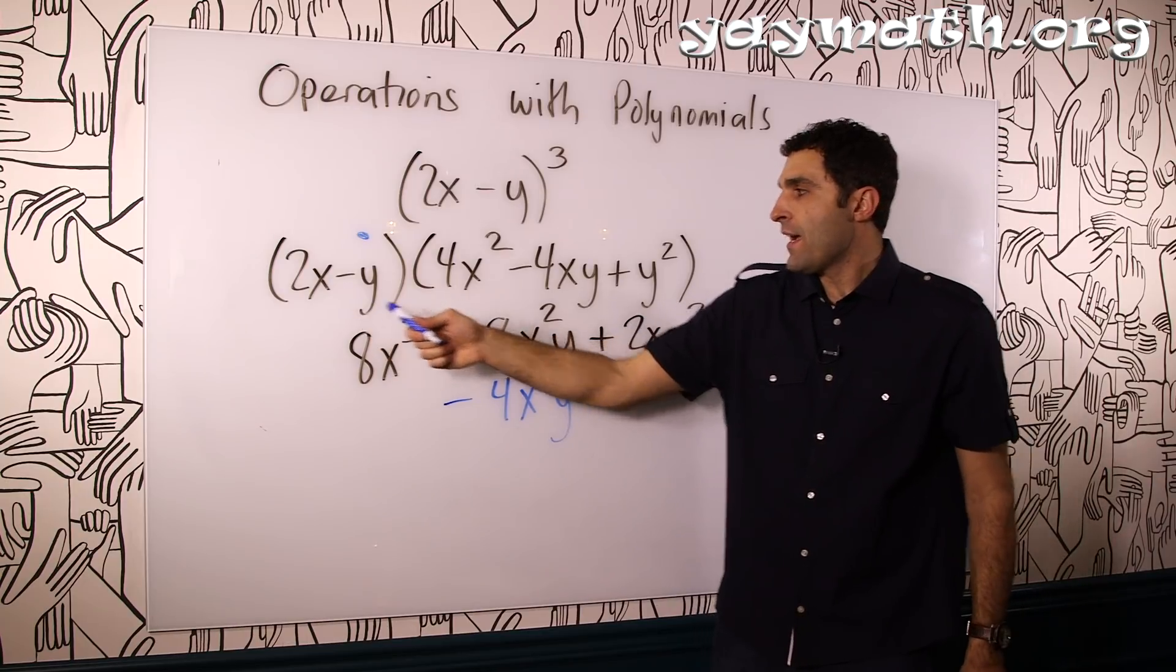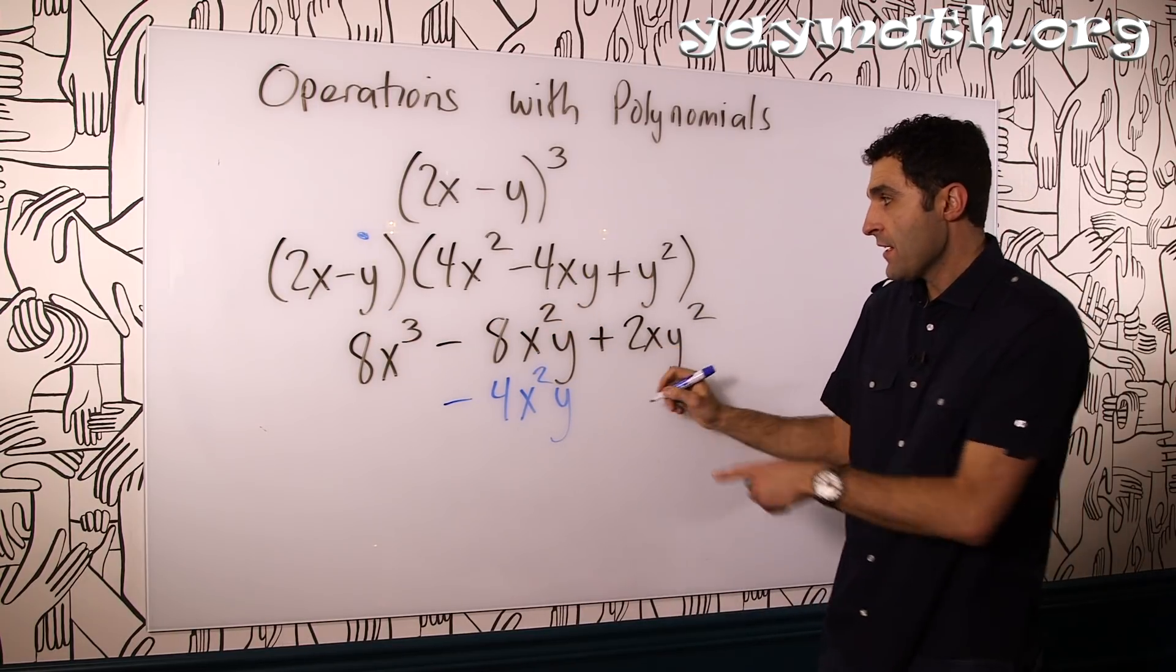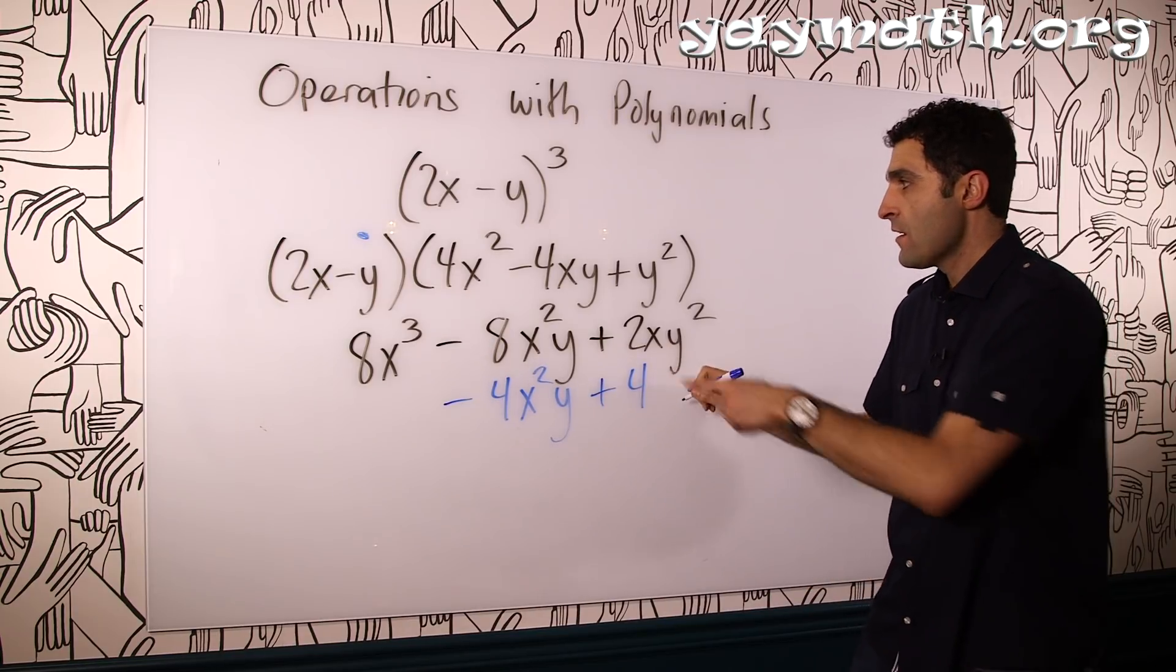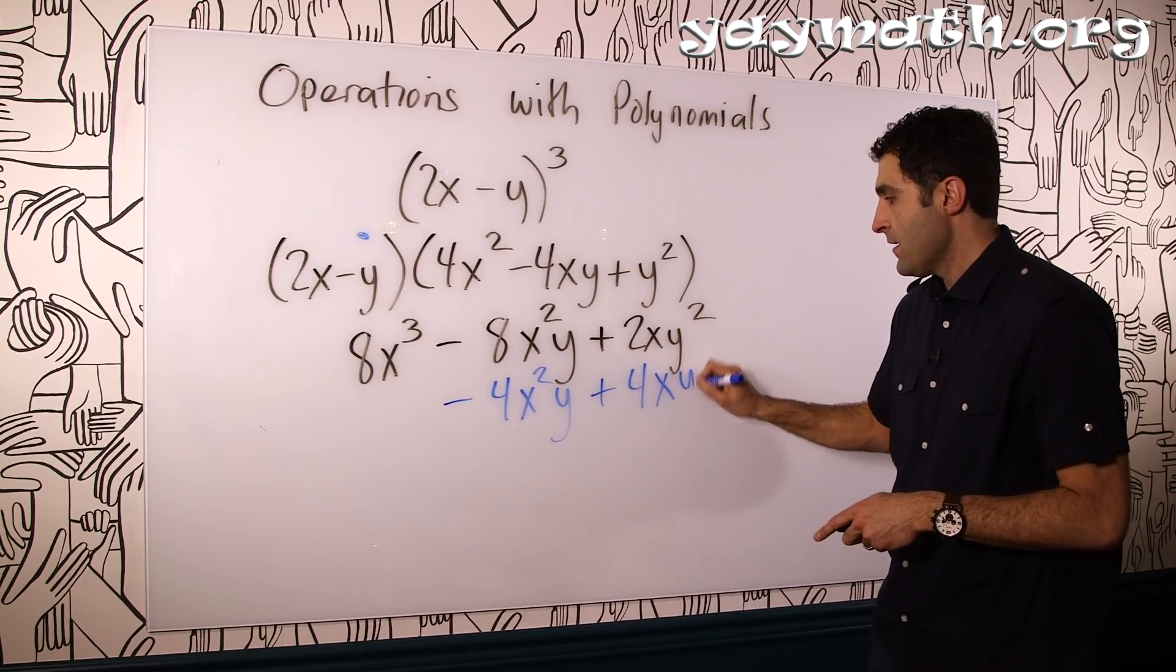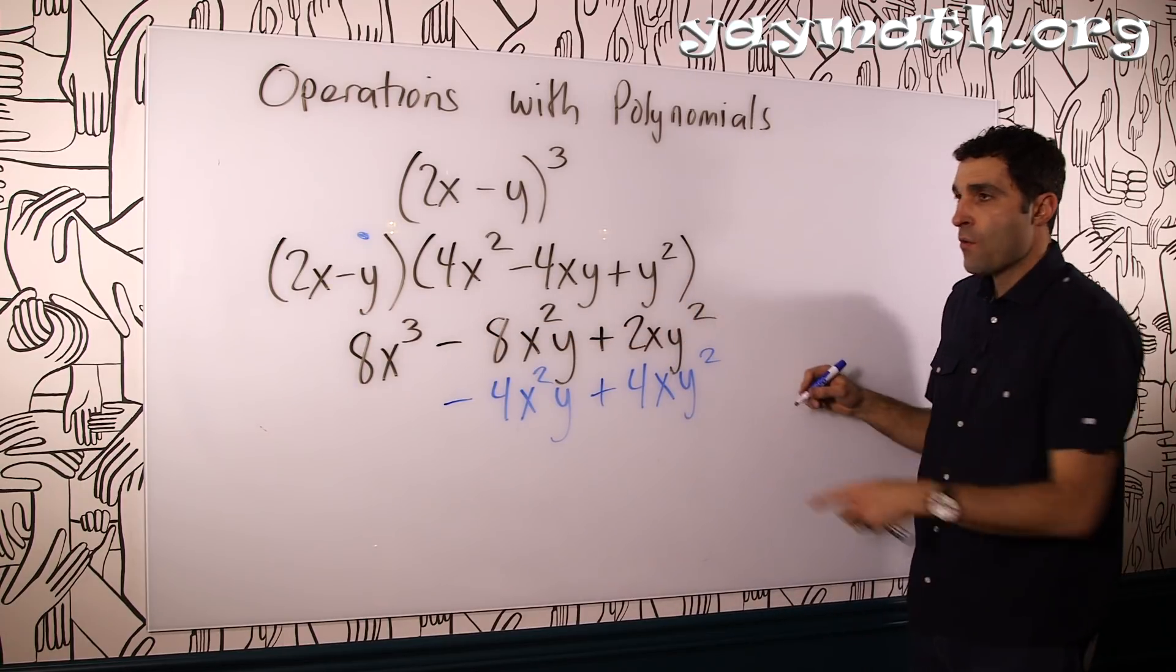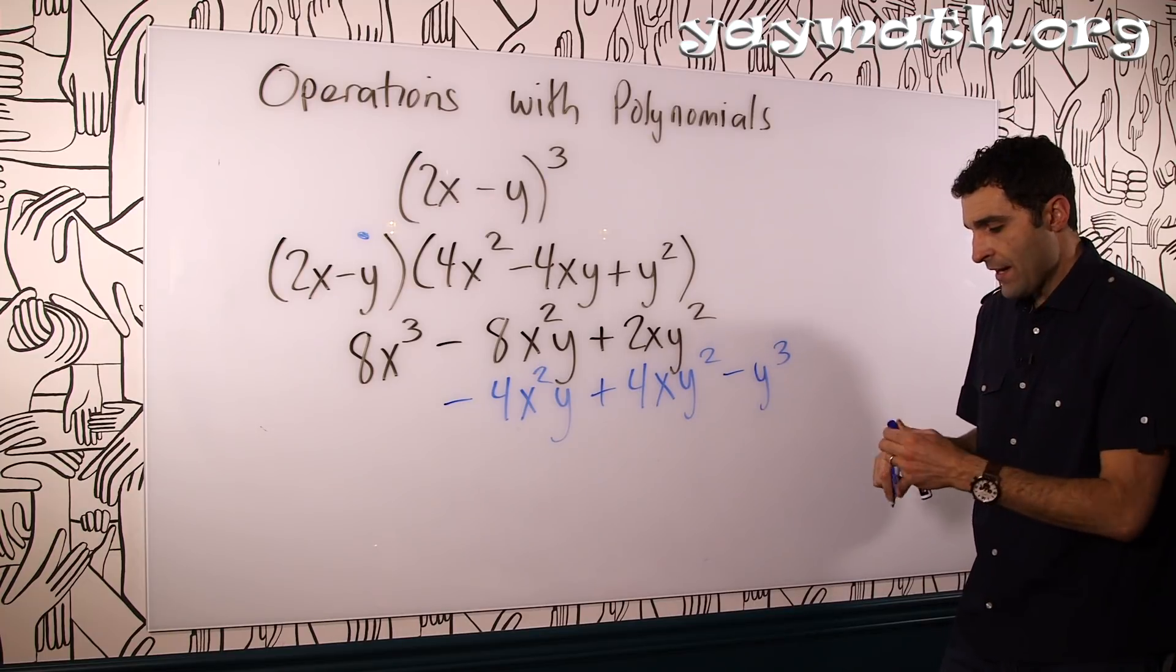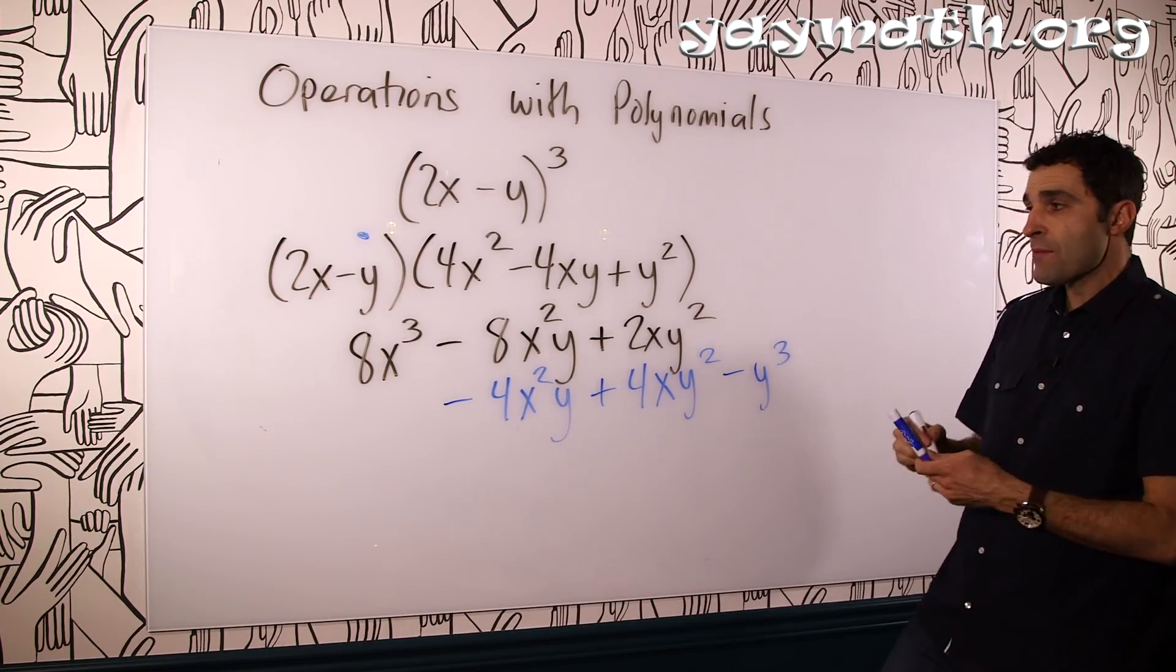And then you have negative y times negative 4xy. That would be over here, plus 4xy squared. And then we have negative y times positive y squared. That's negative y cubed. It's out here. And then we're just going to add down. And this problem is complete.